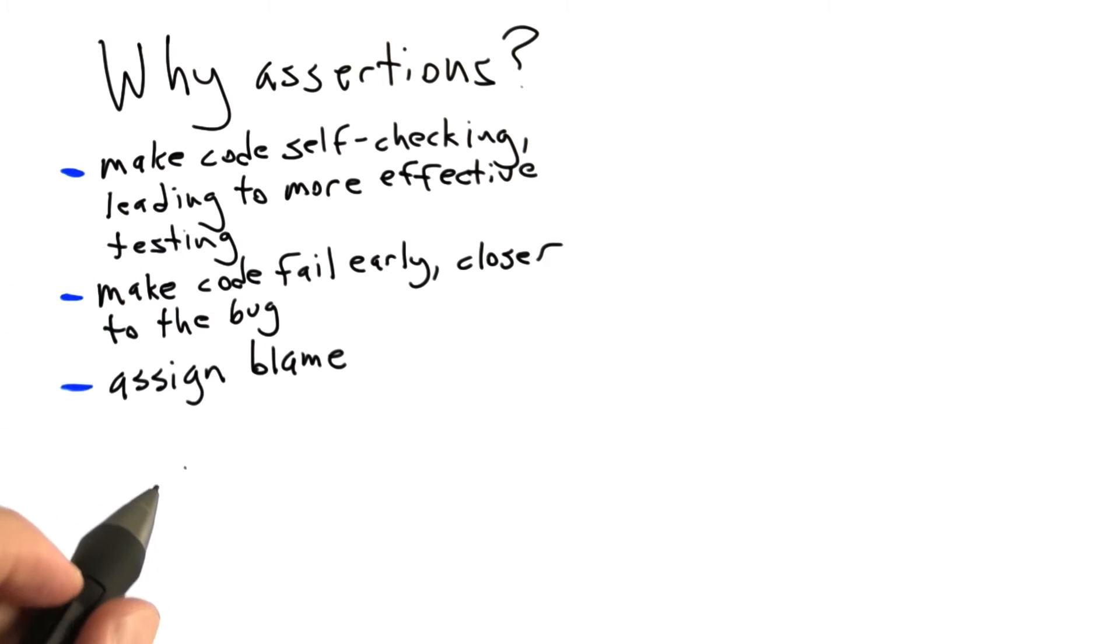Third, assertions can help us assign blame. So it's often the case that assertions live at interfaces between different modules. And in many cases, it's possible to look at where the bad values came from that led to the assertion failure and use that information to assign blame to one of the modules involved in the call or to the other one.